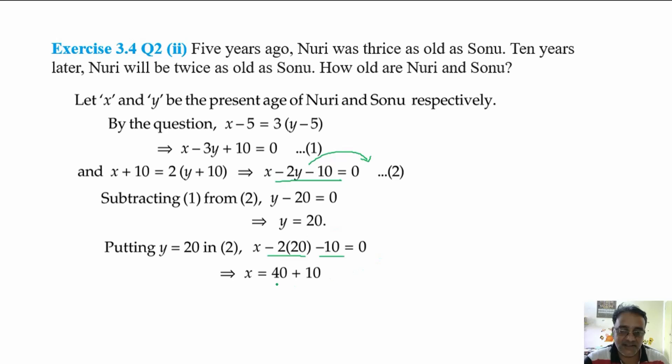Or if you shift to right hand side you will get 40 plus 10. So what is the final value of x? 50. Hence the present age of Nuri is 50 years and the present age of Sonu is 20 years. Any doubt in this question? No sir.